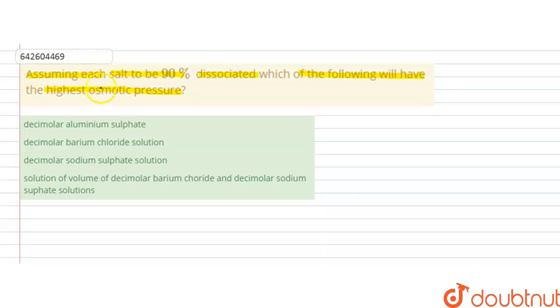In this question we are asked: if each salt is dissociating 90%, which will have the higher osmotic pressure?